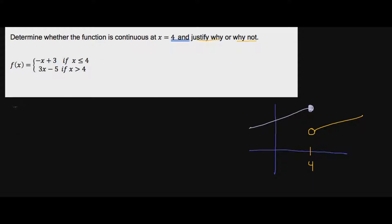Let's determine whether this is continuous. Number one: does the point exist? The point with the equal-to symbol is the one we plug four into — that's the top equation. So f of four equals negative four plus three, which is negative one. In other words, f of four equals negative one. You can see the graph is drawn wrong — this point should actually be down at negative one — but it doesn't matter, because it just helped me visualize how the graph will kind of look.